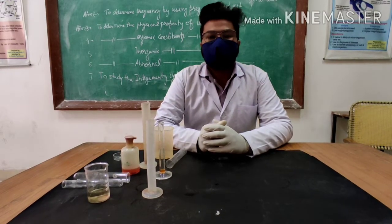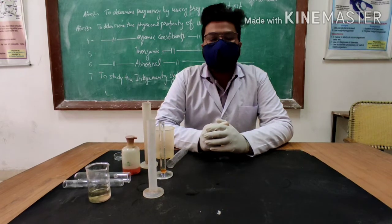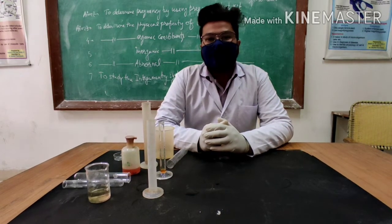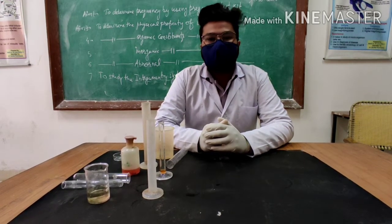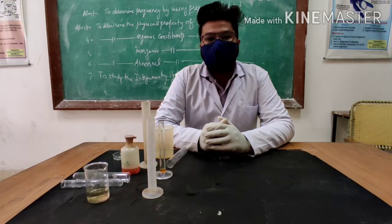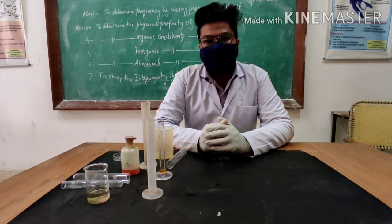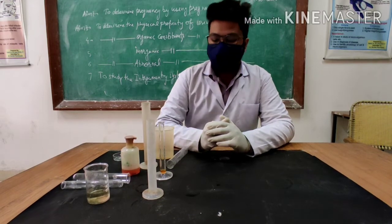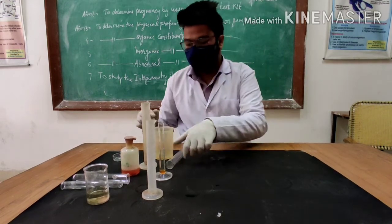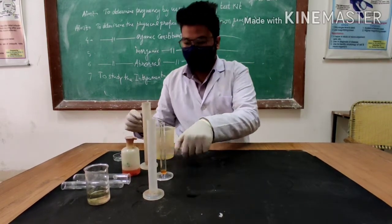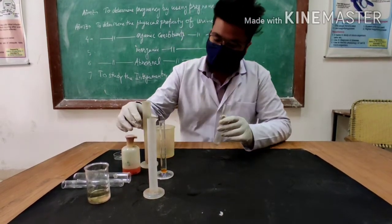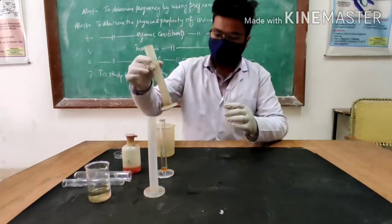The next test, which is known as Schiff's test, is used for the determination of creatinine in the given urine sample. In this test, firstly we will add 5 ml of urine in the test tube.